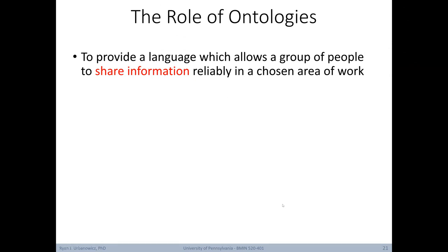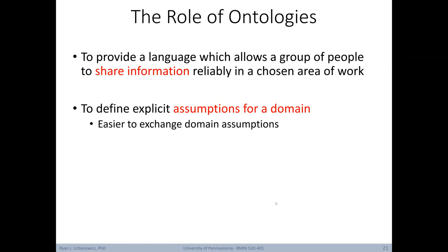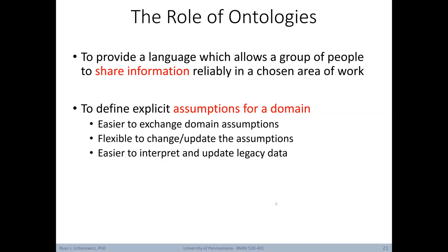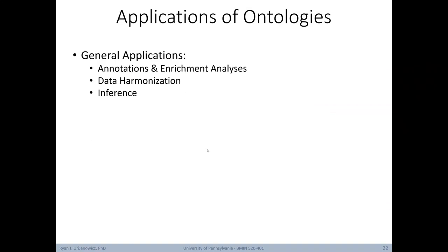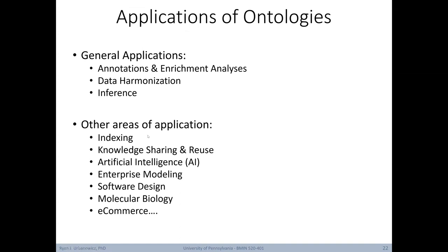Now let's look at the role of ontologies. Well, mainly they are meant to provide a language which allows a group of people to share information reliably in a chosen area of work. They seek to define explicit assumptions for a domain, so that it's easier to exchange domain assumptions. There's more flexibility to change or update the assumptions, and it's easier to interpret and update legacy data, or data that was collected a long time ago. Ontologies also seek to provide more precise definitions of resources and to make them more suitable for machine processing. Some general applications of ontologies include annotation and enrichment analysis, data harmonization, and inference. Some other areas of application include indexing, knowledge sharing and reuse, artificial intelligence in general, enterprise modeling, software design, molecular biology, and e-commerce.